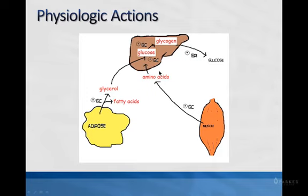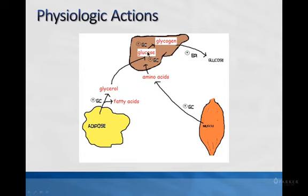The glycerol backbone from triglycerides found in adipose tissue can be transported to the liver and serve as a carbon source to make glucose, as well as amino acids that are released when muscle is broken down. Glucocorticoids also stimulate the breakdown of muscle protein — they stimulate protein degradation. When you break down protein, you get amino acids. The glucogenic amino acids can be used, along with glycerol, as carbon sources for making glucose.